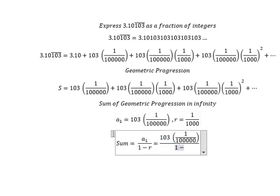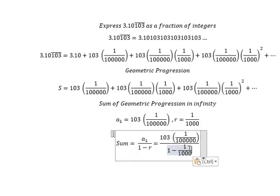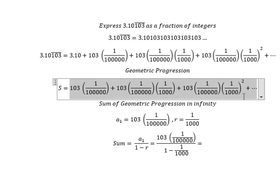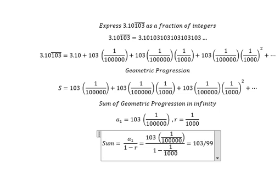If we calculate this, we can transform the series into a fraction of integers. That is about 103 over 99,900, which equals 31 over 10 plus 103 over 99,900, giving us 309,793 over 99,900.